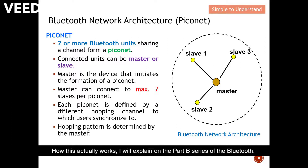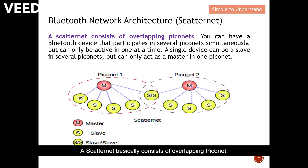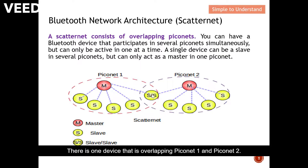A scatternet basically consists of overlapping piconets. As shown, there is one piconet and another piconet, with one device overlapping both. When two piconets are joined together like this, we call it a scatternet.